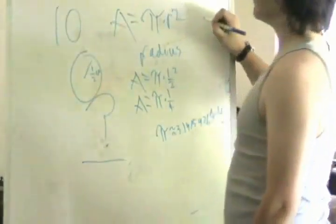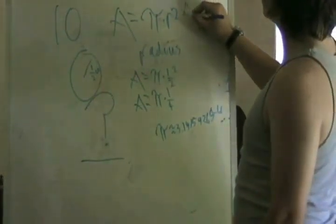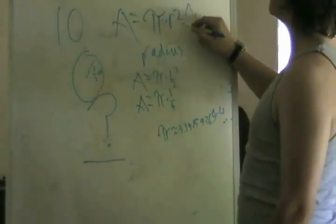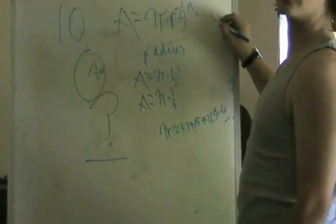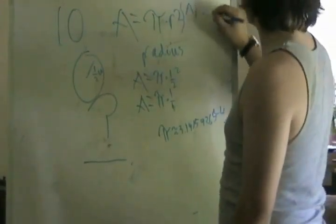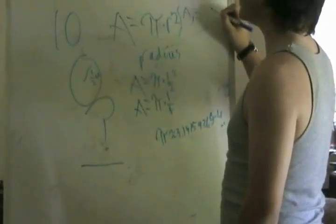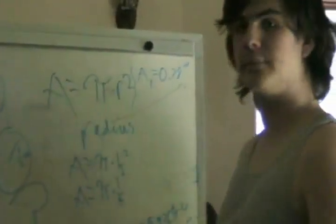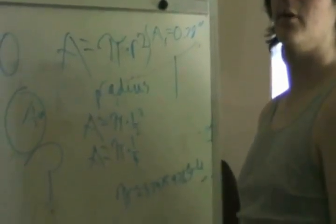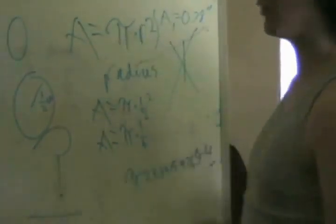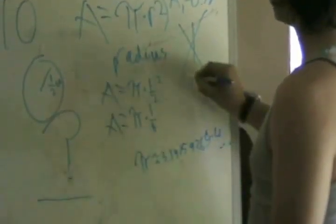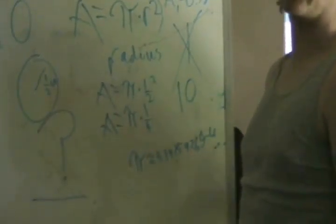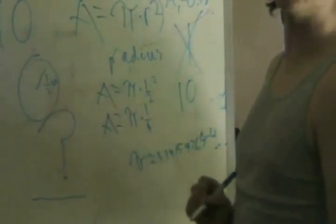So, the area of one circle, or checkers piece, is equal to 0.78 inches. But this is only the area of one checkers piece. We do not have one checkers piece. We have 10 times one checkers piece, or 10 checkers pieces.